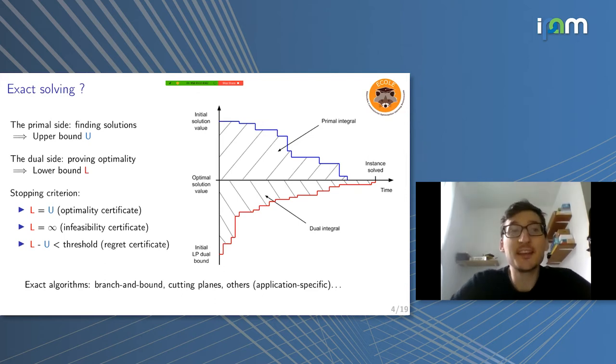So what's exact solving for MILPs? Exact solving consists of two parts. First, you have to be able to produce upper bounds. I'm considering minimization problems here. So an upper bound is a feasible solution. If you can provide a solution which satisfies all of the constraints in your problem, then it's feasible, it has an objective value, you know that you can at least do that well. It's an upper bound.